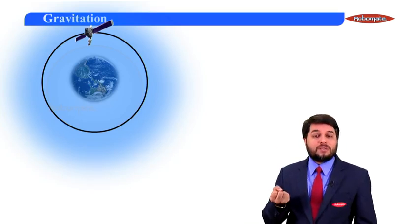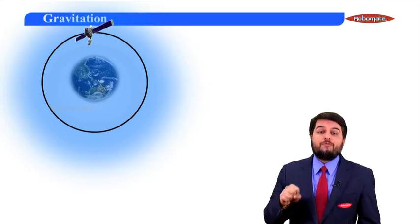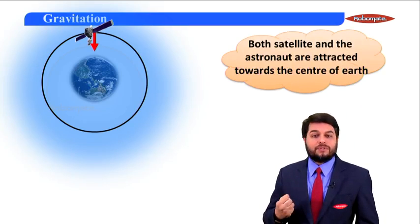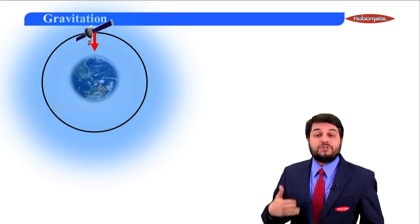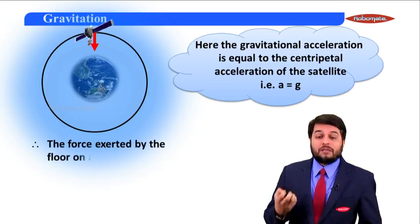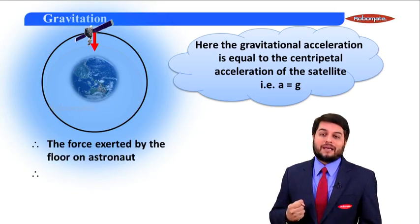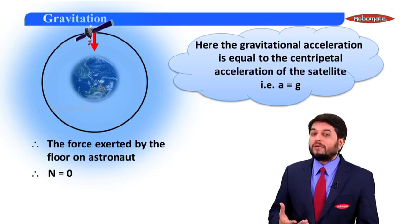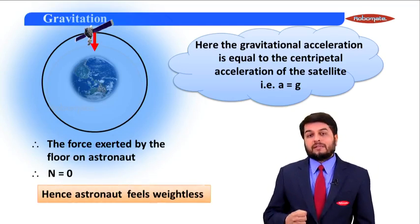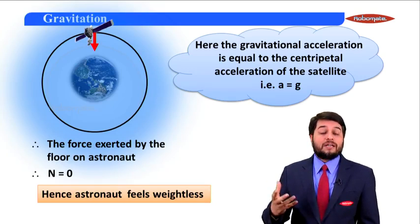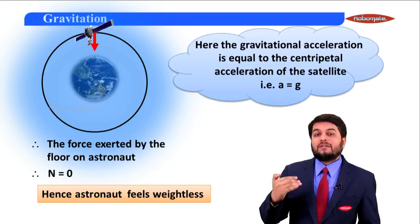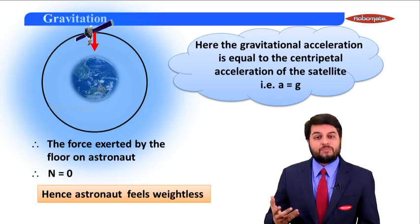The gravitational force is there, but it is being nullified by the centrifugal force, because of which its influence becomes zero. Both the satellite and the astronaut are attracted towards the center of the Earth, but the centrifugal force nullifies the effect. The gravitational acceleration equals the centripetal acceleration. The force exerted by the floor of the satellite on the astronaut becomes zero — the normal reaction becomes zero — and this is how the astronaut experiences weightlessness inside the satellite, just like a freely falling body.